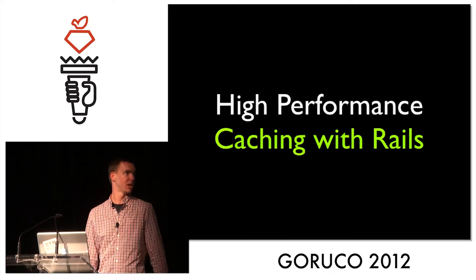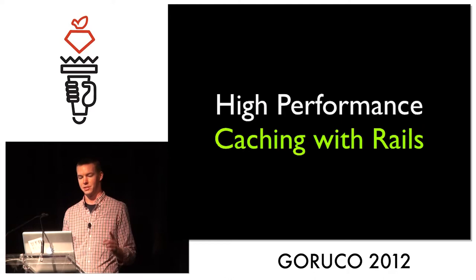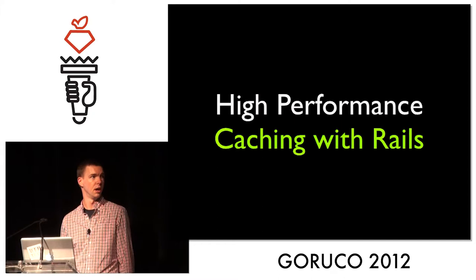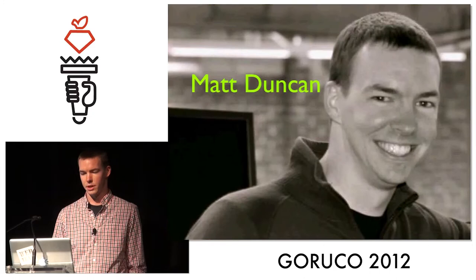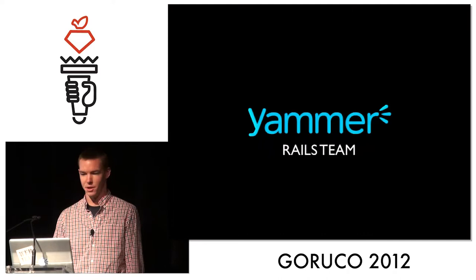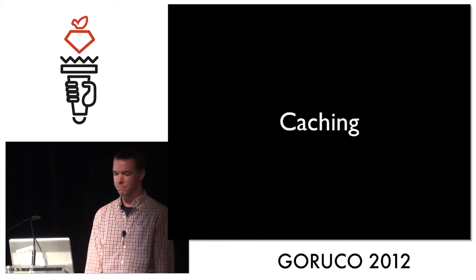Hi everybody. I'm going to talk about high performance caching with Rails today. In this talk, high performance actually has two meanings: one is it's fast to run — caching is what we use to make things fast — and the other is that it's fast to develop. I assume all of you use Ruby, so you understand why it's important to build things quickly. I am Matt Duncan, I work on the Rails team at Yammer. Let's talk caching.